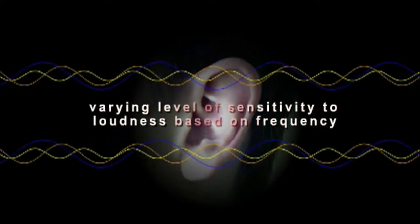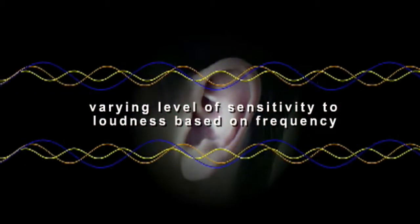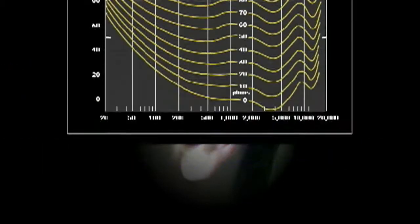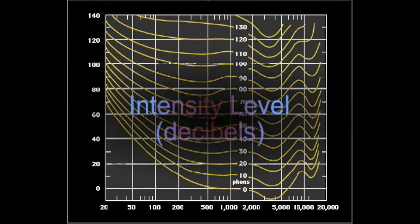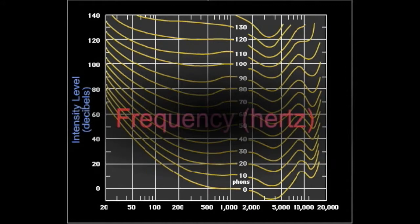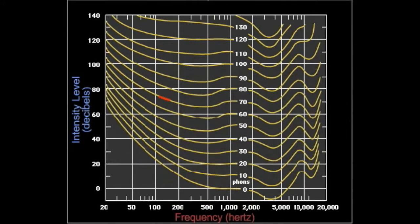The ear is a non-linear transducer. This means that it has a varying level of sensitivity to loudness based on frequency. The Fletcher-Munson equal loudness contour curves indicate the ear's sensitivity to varying frequencies at different loudness levels.